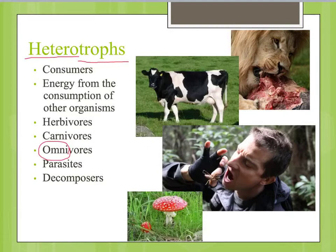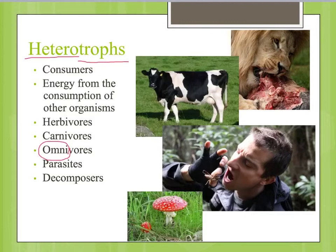The final layer of heterotrophs would be the decomposers. Whether or not decomposers are included in heterotrophs is a subject for debate. Decomposers feed on generally dead things. When they break them down, they release nutrients which then go back to the autotrophs. So decomposers would be things like fungi and bacteria in the soil.